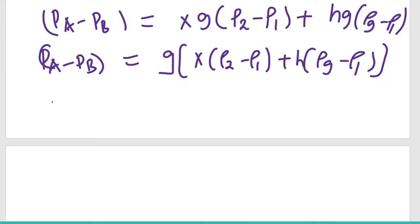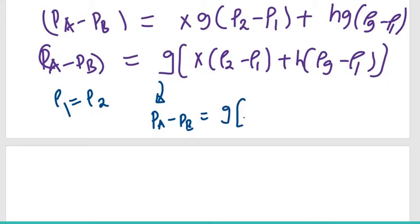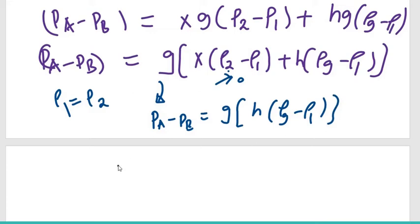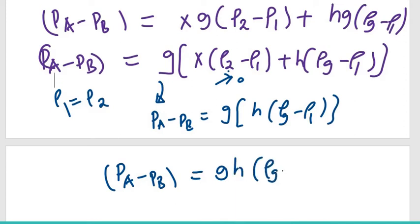If it is the same liquid in both pipes A and B, then ρ₁ equals ρ₂, and the equation simplifies because the x term goes to zero. Therefore the equation becomes: P_A minus P_B equals g times h times (ρ_g minus ρ₁), where ρ_g is the density of the manometric fluid and ρ₁ is the density of the liquid at A.